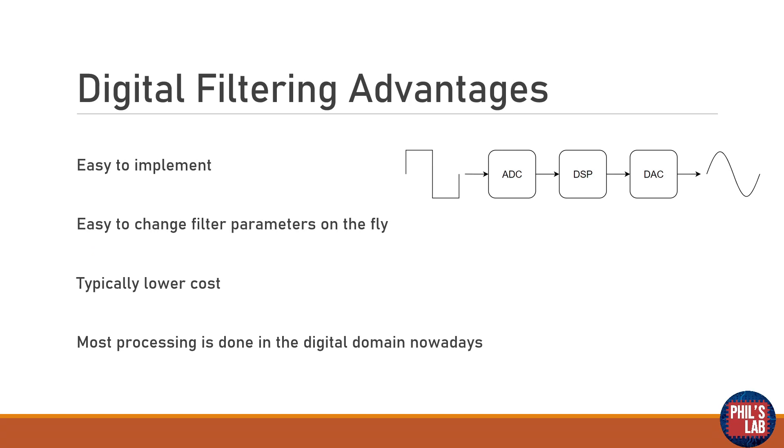Here are some of the digital filtering advantages. Of course we're going to need some extra hardware, for example analog to digital converters, the actual processor itself and then a digital analog converter. The thing is they're pretty easy to implement these filters, they're very easy to change on the fly, for example if you want to change the cutoff frequency or type of filter and typically you can get away with a lower cost and a lower overhead for designing. Additionally most processing is done in the digital domain nowadays anyway, so it's a pretty useful trick to know.